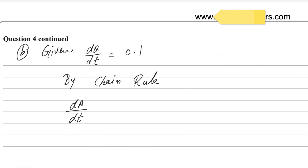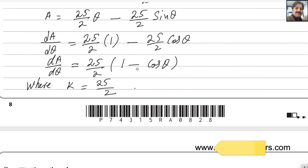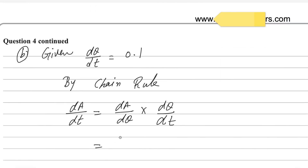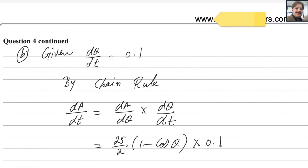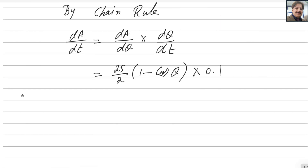By the chain rule: dA/dt = (dA/dθ) × (dθ/dt). From the previous part, dA/dθ = (25/2)(1 − cosθ), and dθ/dt = 0.1. We want to find the rate of increase when θ = π/3, so we substitute θ = π/3 into the expression.